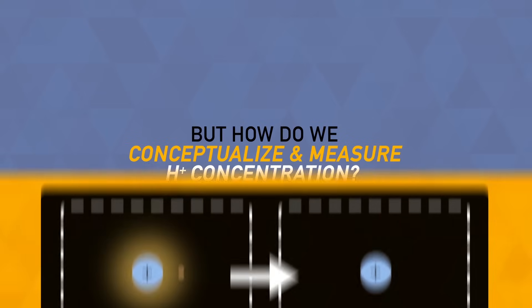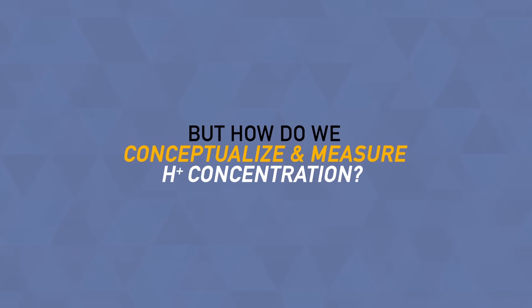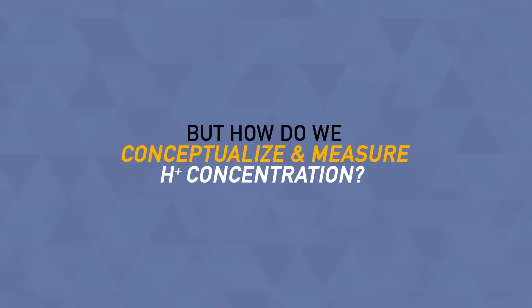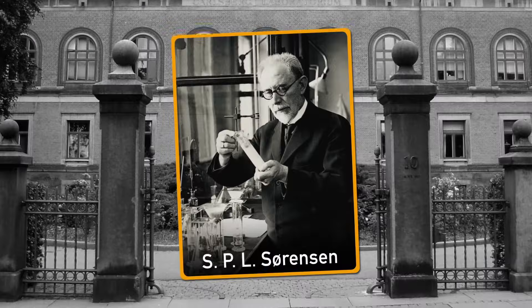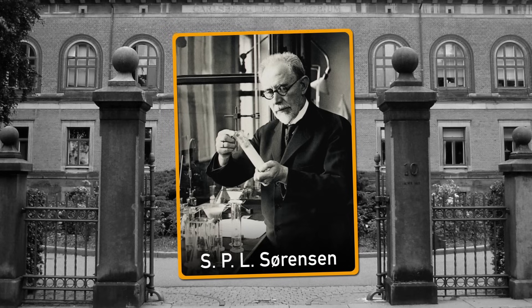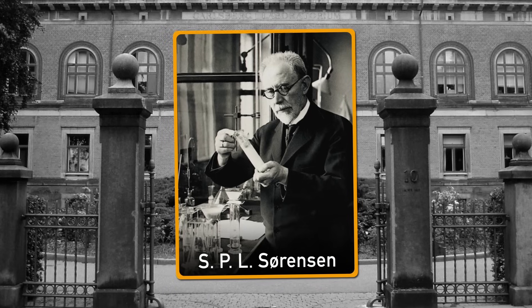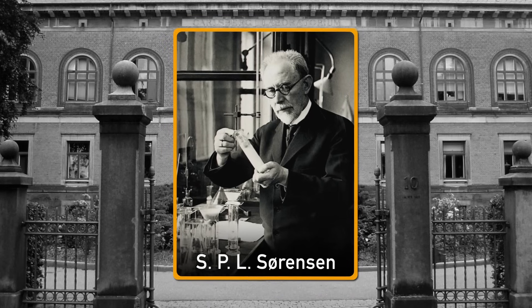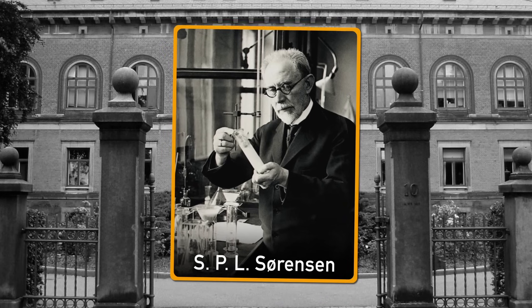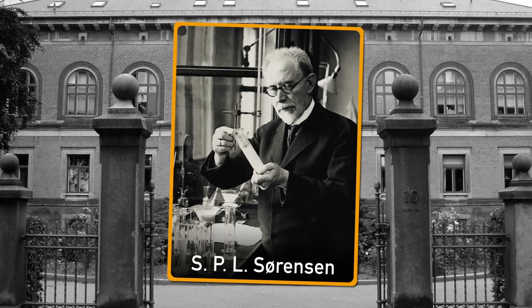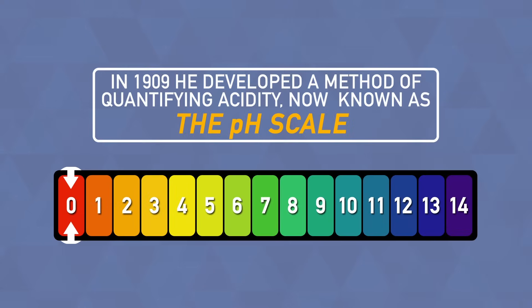But how do we conceptualize and measure H+ concentration? Soren Sorensen, a Danish chemist, pondered this question when he worked at the laboratories of a commercial brewery in Copenhagen. It was in 1909 that he developed a method of quantifying acidity, what is now known as the pH scale.